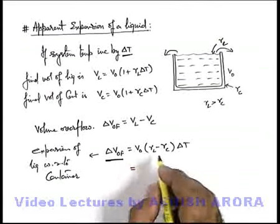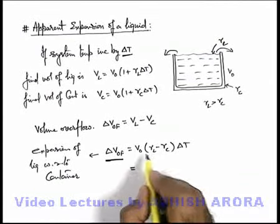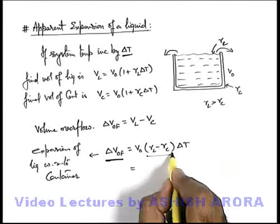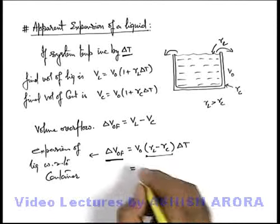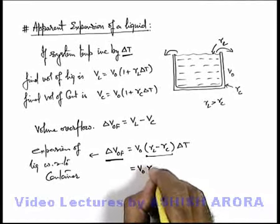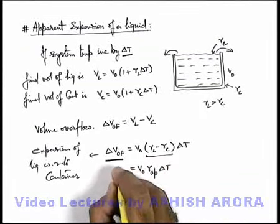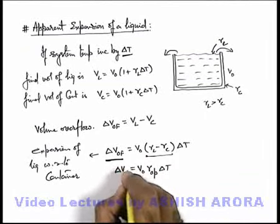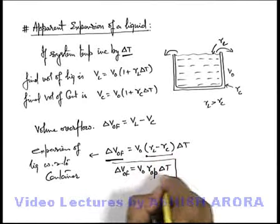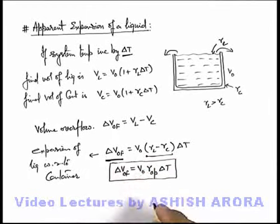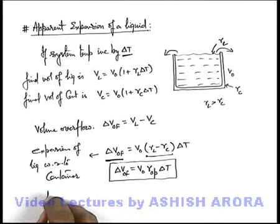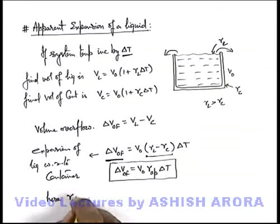So in this situation, this can be written as V₀ multiplied by this difference of the two coefficients, which can be written as gamma AP or gamma apparent delta t. So this is the total overflow volume which can be directly calculated in case if it is required. And here gamma AP is written as gamma l minus gamma c.